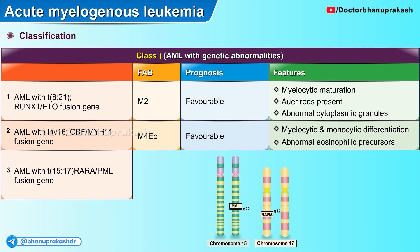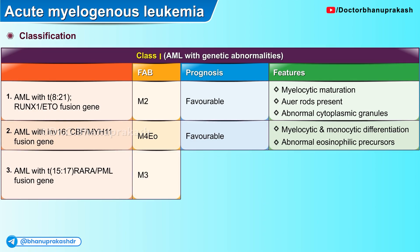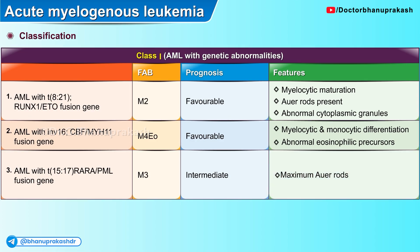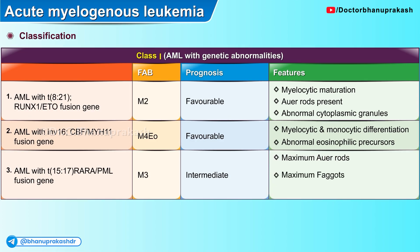The third variant is AML with t(15;17) translocation, resulting in the PML-RARA fusion gene, which is the M3 variant of the FAB system. It shows an intermediate type of prognosis with the maximum number of Auer rods and maximum number of faggots. It is a microgranular variant with a high incidence of disseminated intravascular coagulation.